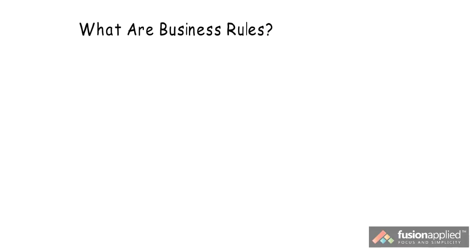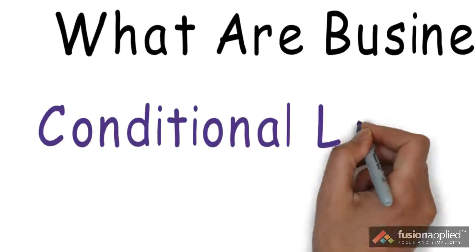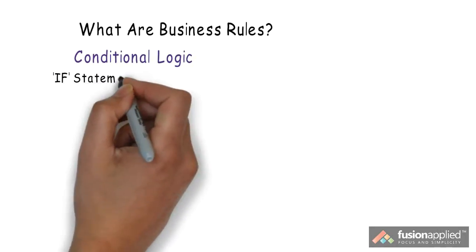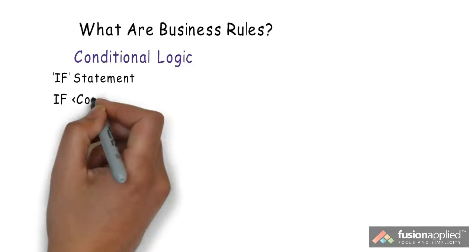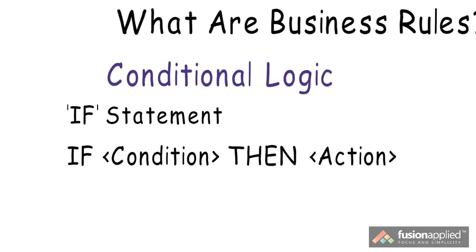Before we implement business rules in JDeveloper for our tutorial, let's do a quick overview of business rules. A business rule could be any conditional logic you have to write in your application. You can think of a business rule as an if statement of the form: if condition, then do some action.